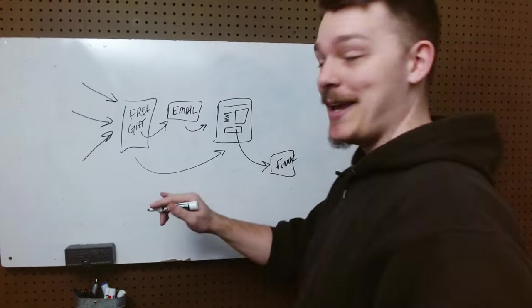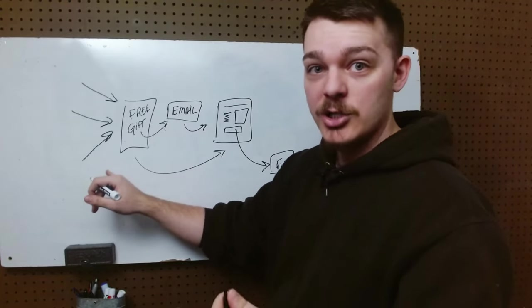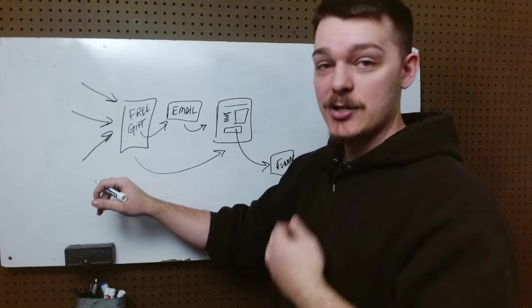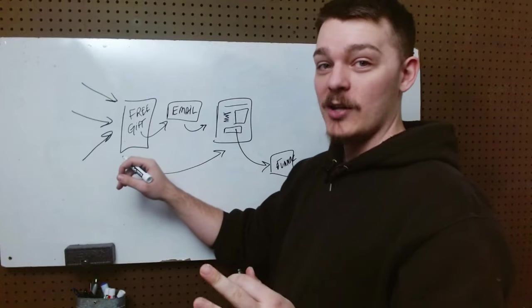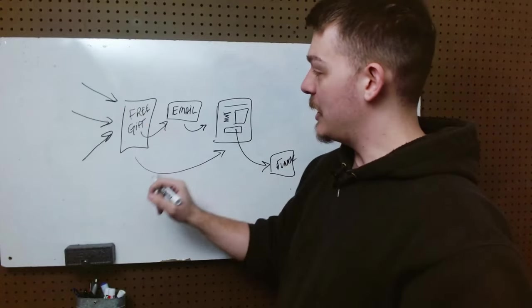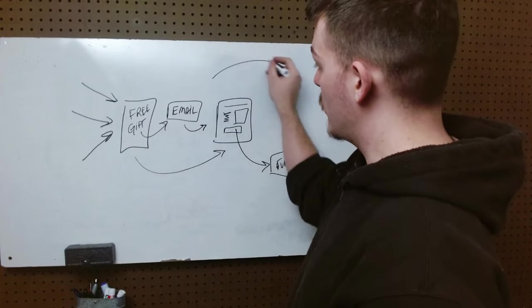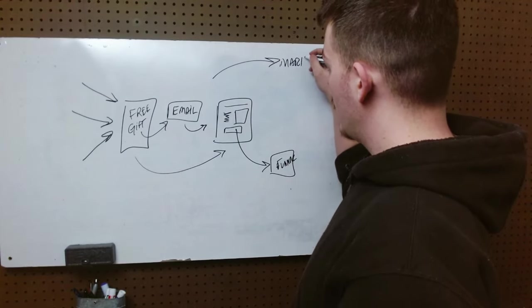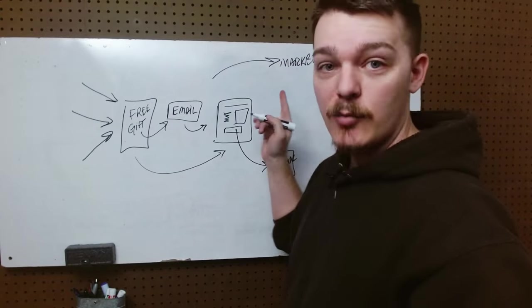So I try to get them in through some version of a paid ad, a free ad, talking to somebody. We're going to go over all of that in a second. Some type of free gift. Then I get their email, which I can then market to them later. I get them on an email list and then I can market to them later.